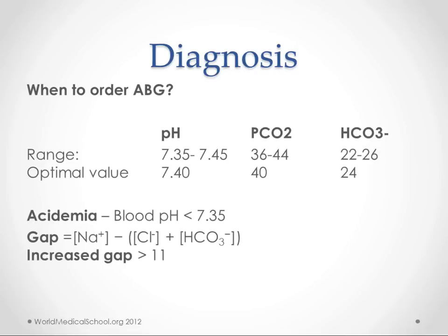Acidemia is blood pH less than 7.35. The anion gap is the difference between measured cations and measured anions. Sodium, chloride, and bicarb are the ions we usually measure — potassium is sometimes included, but most often it's just sodium for the cations. The difference between these equals the unmeasured cations and unmeasured anions. Normally we have a greater number of unmeasured anions, and the normal gap is 11 — over 14 is where we start talking about increased anion gap.